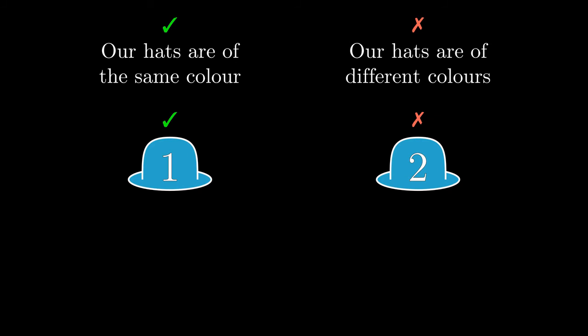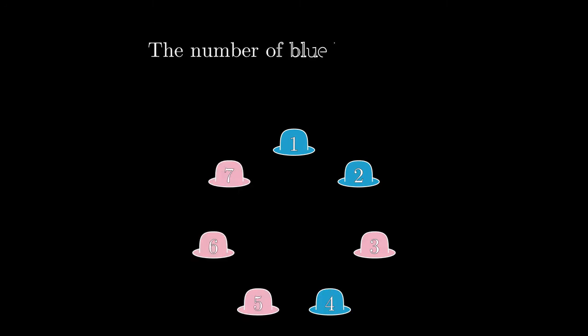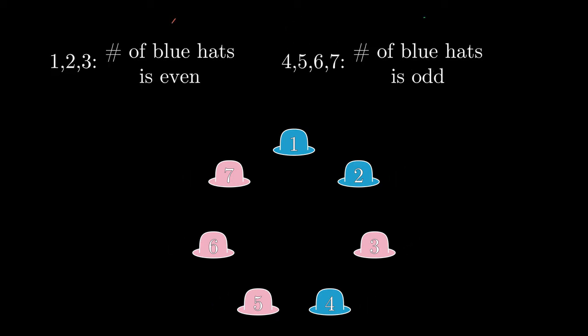But we have more than two players. And in this case, the relevant belief would be something like, the number of blue hats is even. It tells each player what to guess. Player 1 would guess that they have a pink hat, so that there are only two blue hats overall. And player 3 would guess they have a blue hat, so that there are four blue hats. Here, the belief is incorrect, so they all guess incorrectly. If it was a correct belief that they shared, they would all guess correctly. Here, too, we can have opposing beliefs. For instance, if players 1, 2, and 3 believed that the number of blue hats is even, and the other players believed it was odd, then 1, 2, and 3 will guess incorrectly, and the others will guess correctly.